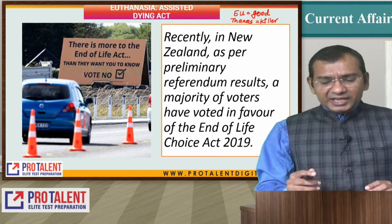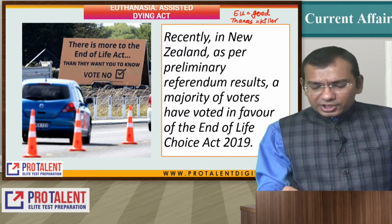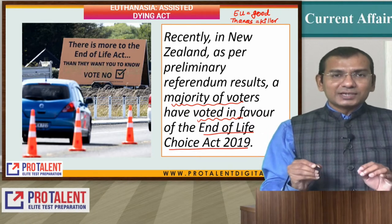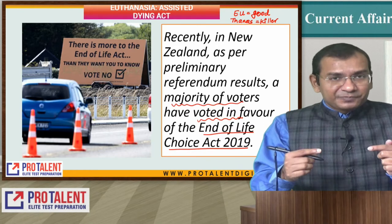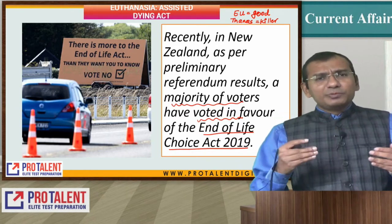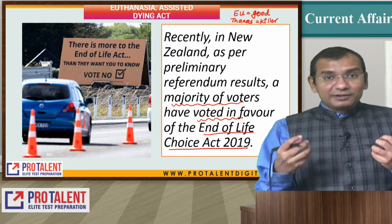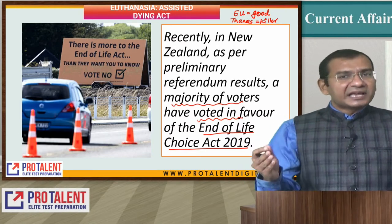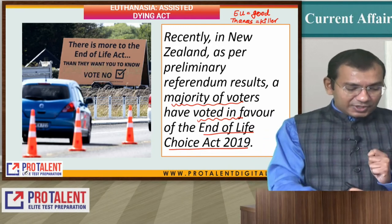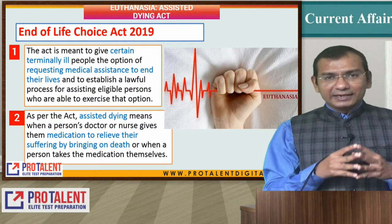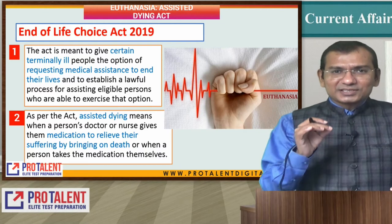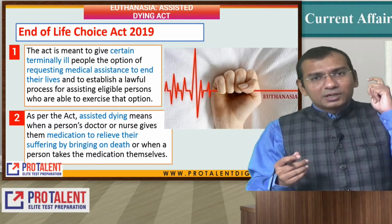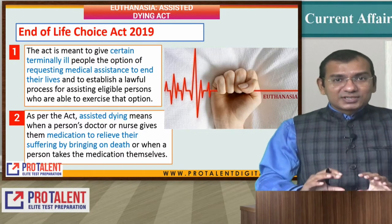Recently in New Zealand, as per their preliminary referendum results, a majority of voters have voted in favour of the End of Life Choice Act 2019. New Zealand is considered to be a very advanced nation. The people there want a very good life — not just a basic living lifestyle, but a more luxurious lifestyle which involves a lot of freedom. This is a very important case for us to understand.